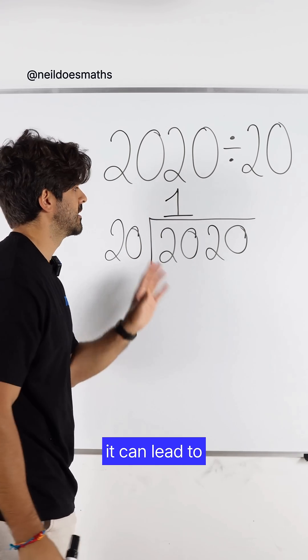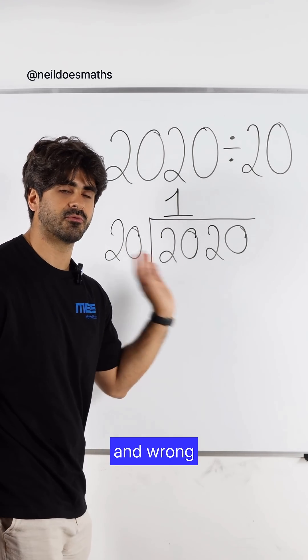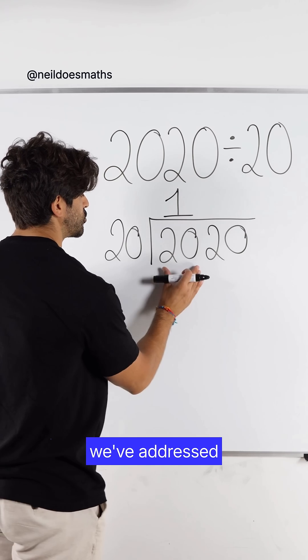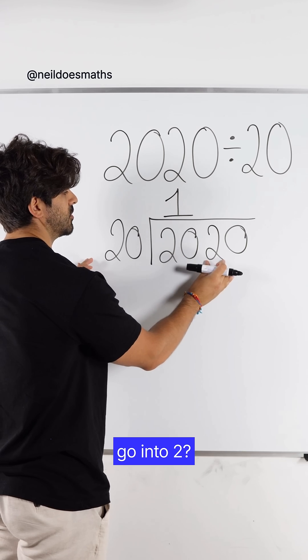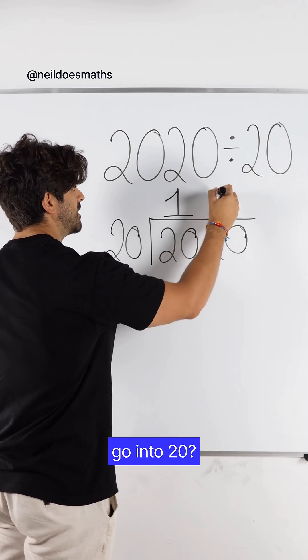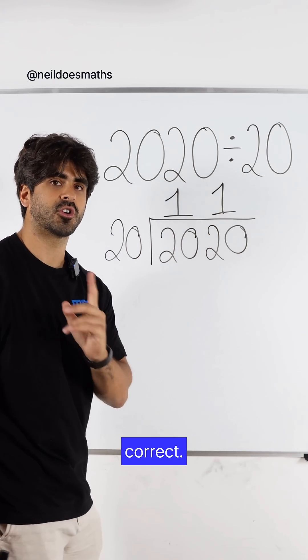Now, by doing it this way, it can lead to misconceptions and wrong answers. Because once we've addressed this 20 into 20, students then go, how many 20s go into 2? Well, it doesn't. So, how many 20s go into 20? They say 11. That's not correct.